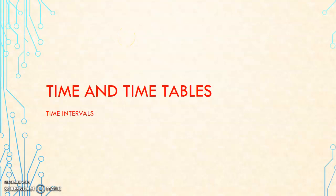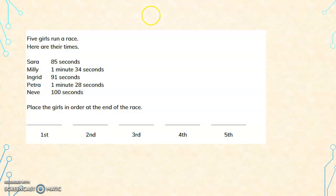Hello children, let us continue with the lesson time and timetables. I hope you have understood how to read the face of the clock and change between 12 hours and 24 hours clock. So now we are going to time intervals. Before that, let us look at another example that is given in your textbook. So 5 girls run a race, here are their times.